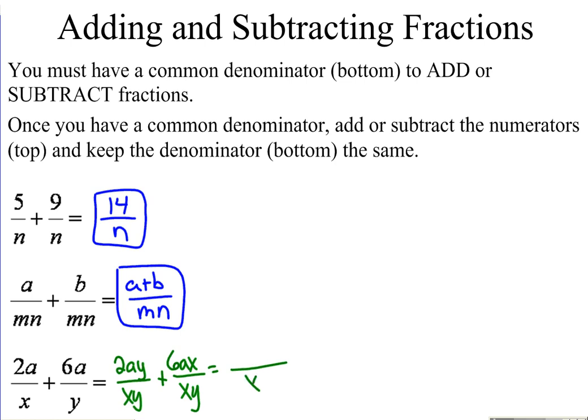Once we convert to a common denominator, I can rewrite it as a single fraction over that denominator. In this case, they are not like terms up top, so all I can do is say that that's 2ay plus 6ax, all divided by xy.